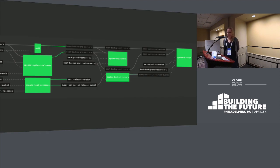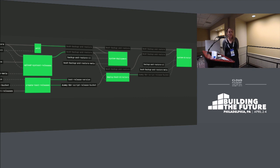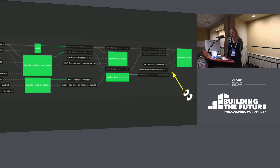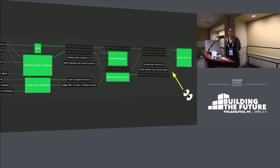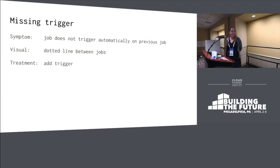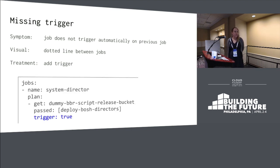After adding that passed constraint, the deploy Bosh director now happens before the system tests. But it's a loose dependency — there's a dashed line going through, not a solid line. That means it has to have happened already, but it doesn't trigger it. Then we started thinking: the test releases are actually a prerequisite for the system tests. But when we made changes to those test releases it didn't trigger, so we could cut a release without testing everything — we were missing builds. So we had to add a trigger there to make sure it triggered automatically on the previous job. Now it's a solid line.